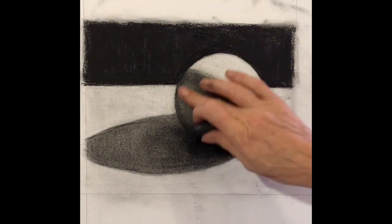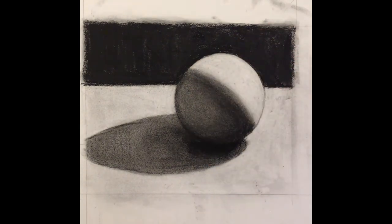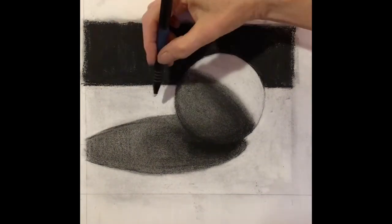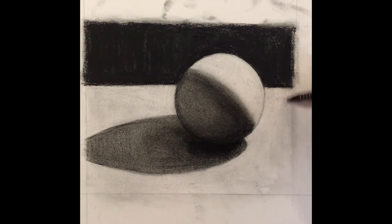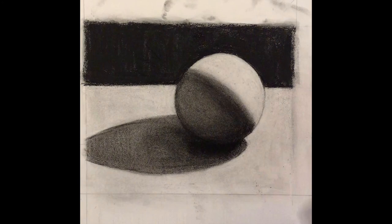A little bit more of the reflected light in there. I'm really at this point just kind of really fine-tuning my drawing. We'll be talking about the cast shadow as a shape later on.